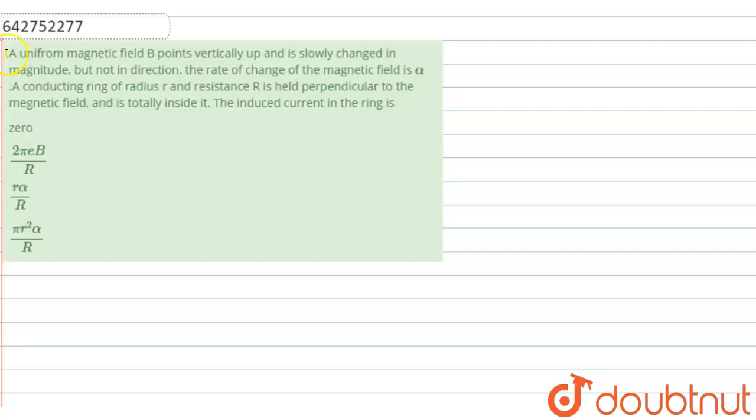Students, the question is: A uniform magnetic field B points vertically up and is slowly changed in magnitude but not in direction. The rate of change of magnetic field is alpha. A conducting ring of radius r and resistance R is held perpendicular to the magnetic field and is totally inside it.